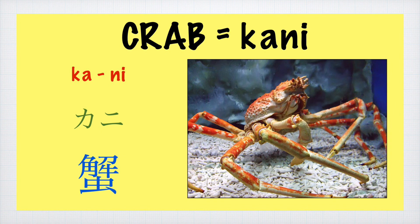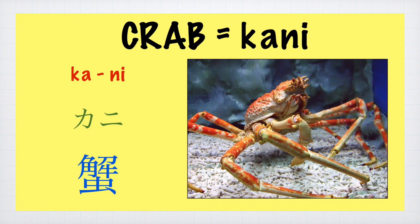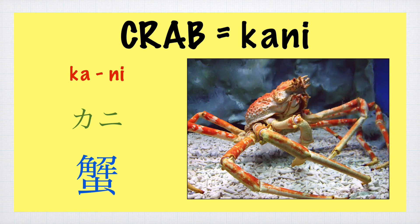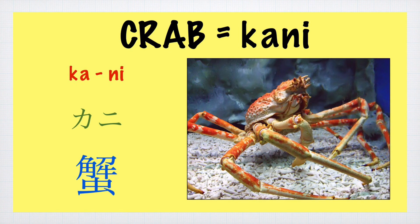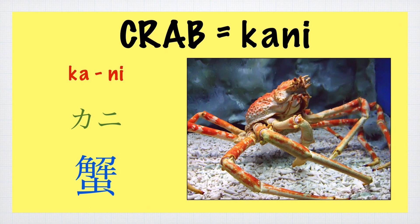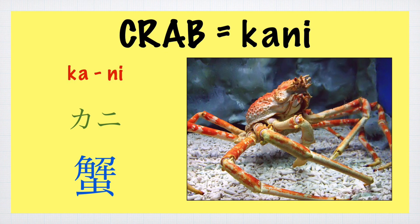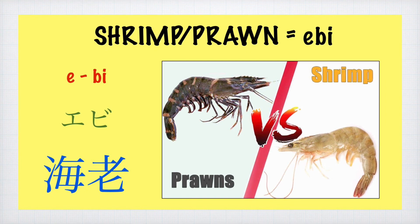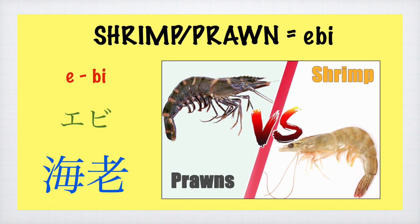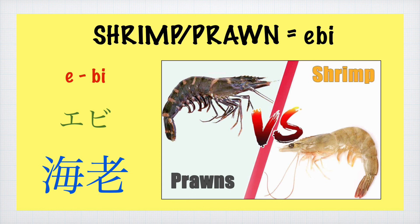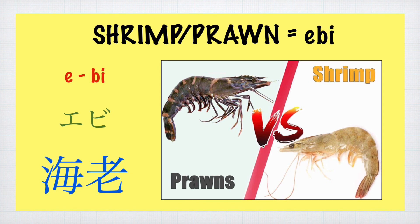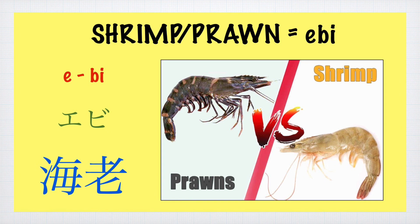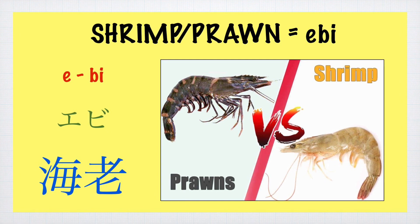Crab — Kani. Kani. Shrimp or Prawn — Ebi. Ebi.